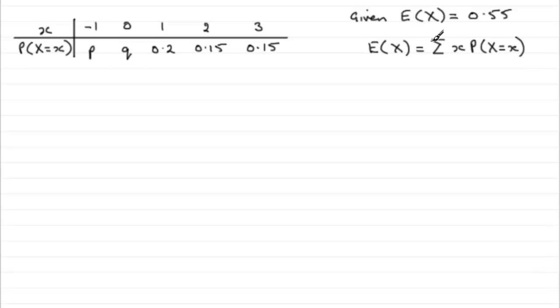Okay, so using this result, we can say that therefore 0.55 for E(X) has got to equal this particular summation. In other words,